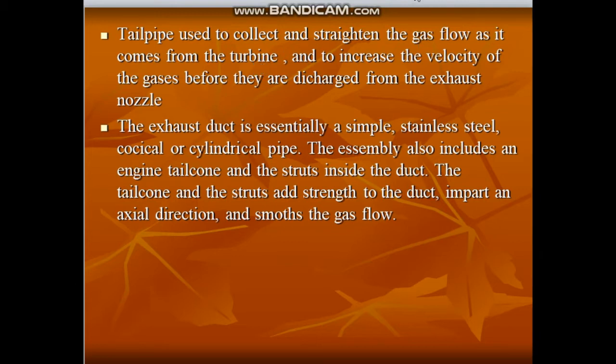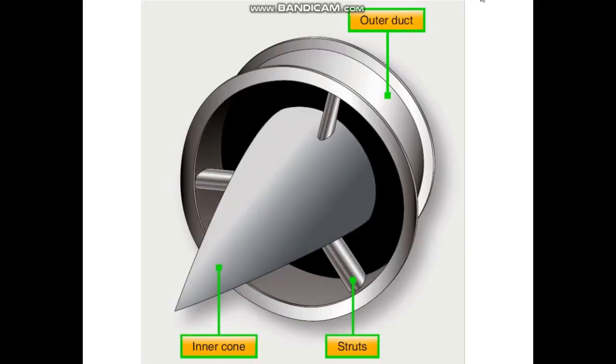The second component is the exhaust duct. The exhaust duct is essentially a simple stainless steel conical or cylindrical pipe. The assembly also includes an engine tail cone and struts inside the duct. The tail cone and struts add strength to the duct, impart an axial direction, and smooth the gas flow. As we see in this figure, here we have the struts, here we have the inner cone, and these are the components of the duct.